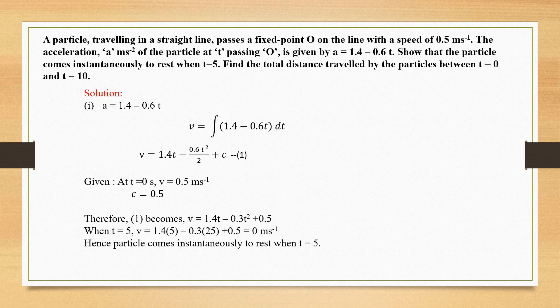Why does C appear? C is the arbitrary constant, as discussed in the introduction — varying C gives an infinite number of solutions. To find C, we use the given condition: when the particle passes the fixed point, its speed is 0.5 m/s. So at T = 0, V = 0.5 m/s. Substituting T = 0 into the equation makes the first two terms zero, giving C = 0.5.